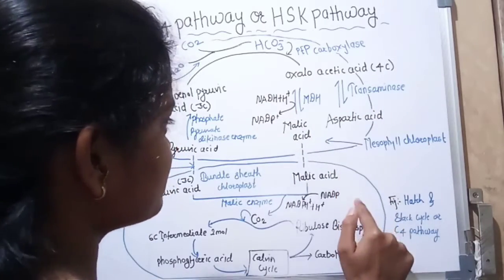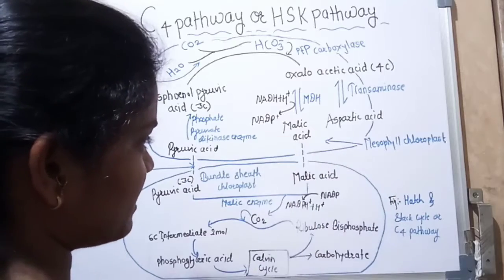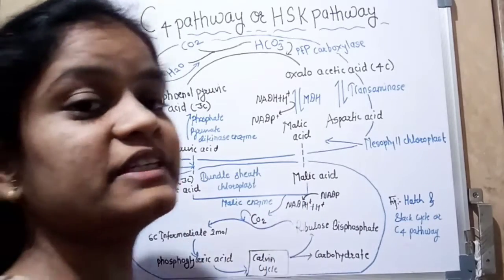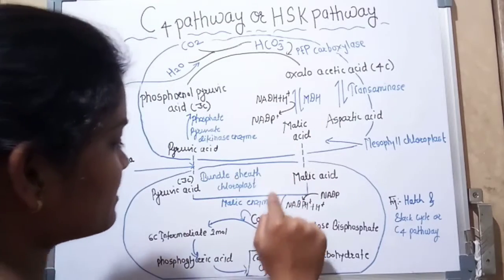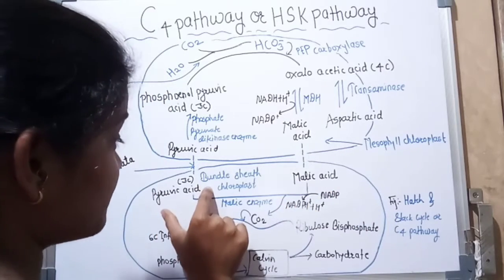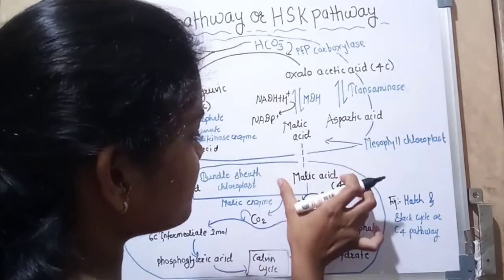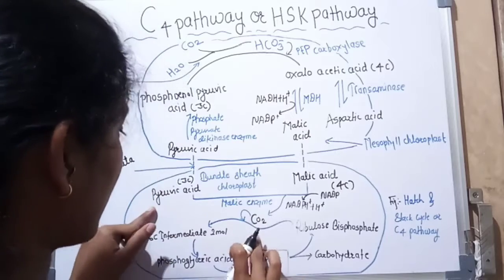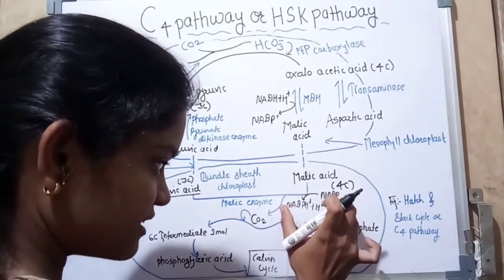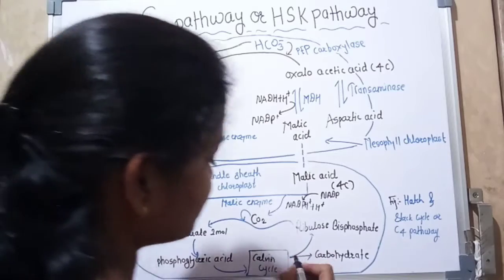Once malic acid and aspartic acid are formed, they are transferred from the mesophyll cells to the bundle sheath cells through plasmodesmata. In the bundle sheath cells, the malic acid undergoes oxidative decarboxylation, releasing CO2 and the energy carrier NADPH+H⁺, and forming pyruvic acid, which is a three-carbon compound. So from the four-carbon malic acid, one CO2 is released and the remaining three carbons form pyruvic acid.